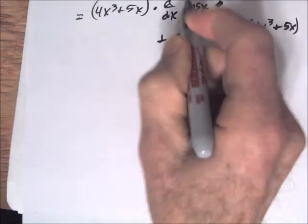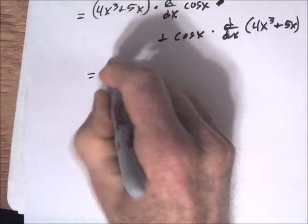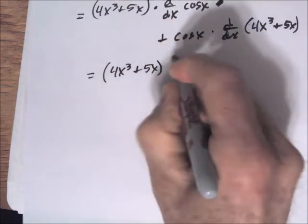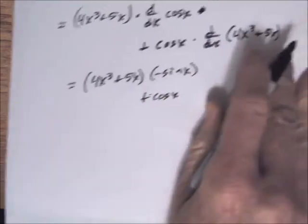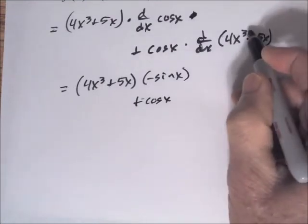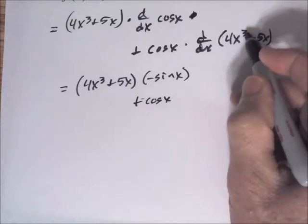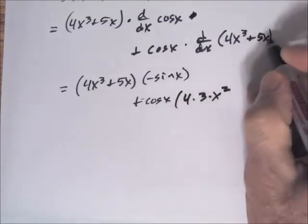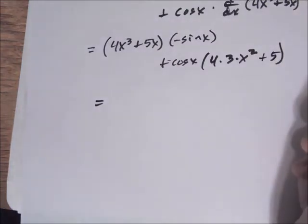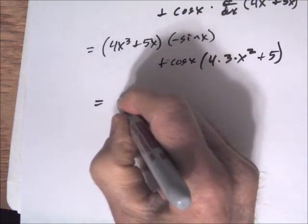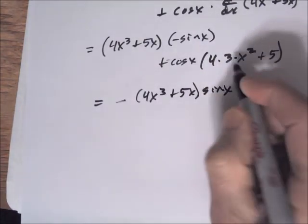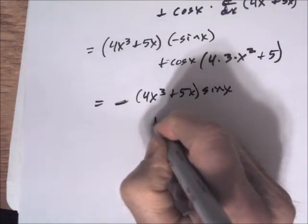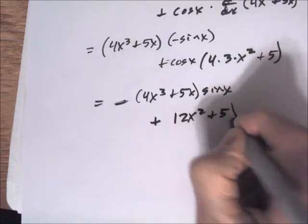So the derivative is (4x³ + 5x)(−sin x) + cos x · (12x² + 5). Pulling out the minus sign from the first term gives −(4x³ + 5x)sin x + (12x² + 5)cos x. That's the derivative of that function.